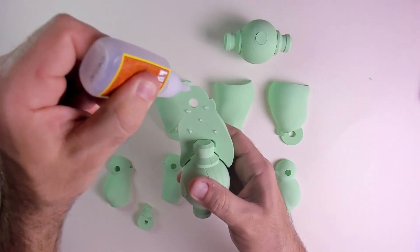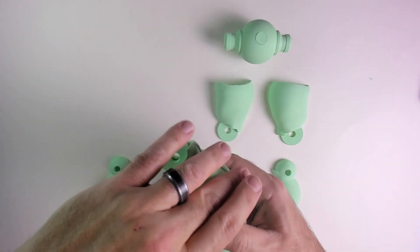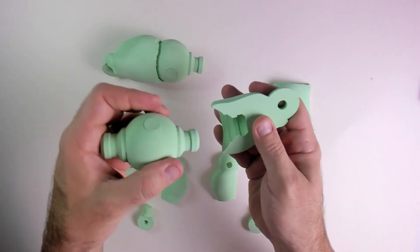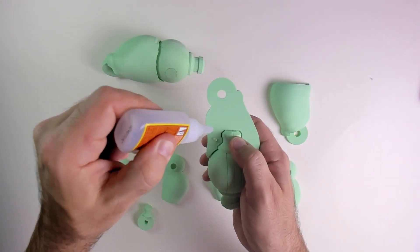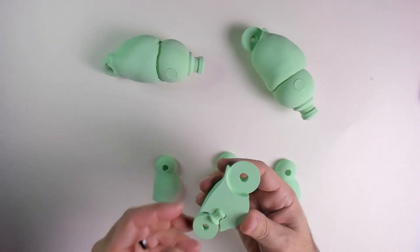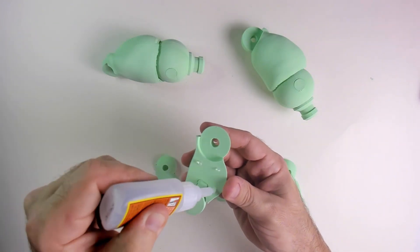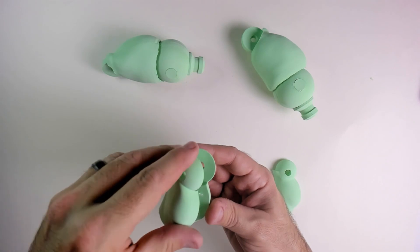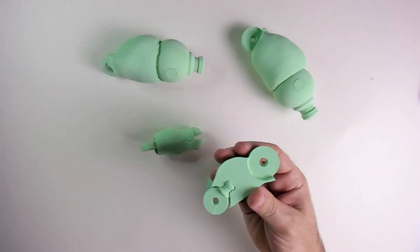I add some dots of glue and then attach the other half. Then I do the same for the other leg, and again double checking that it's in the right way. Now I add the foot hinge to the lower leg and glue both halves together. Then the same for the other leg.